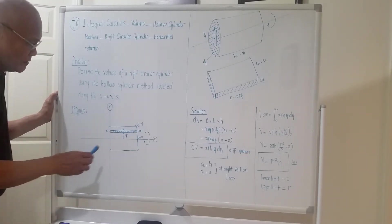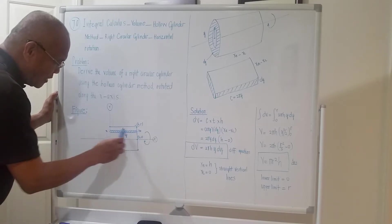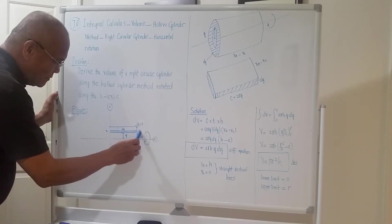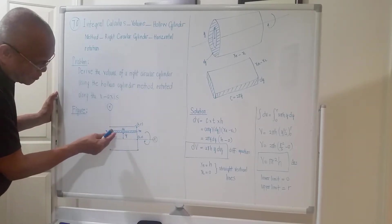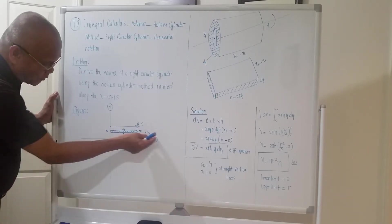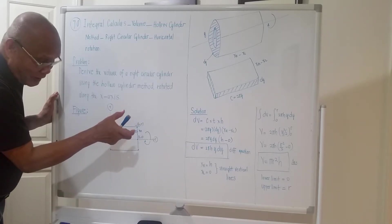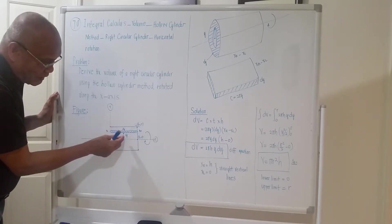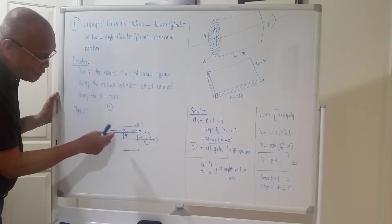This is the horizontal slice. The distance of this horizontal slice with respect to the axis of rotation is y — that's actually the radius, designated by y. The thickness of this slice is dy.